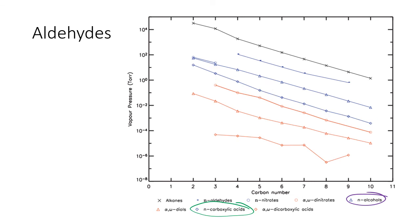That covers the concepts of aldehydes and their physical properties. You need to remember whether they have hydrogen bonding — which they don't — along with their melting and boiling points, solubilities, and vapor pressures.